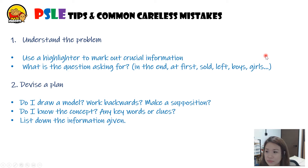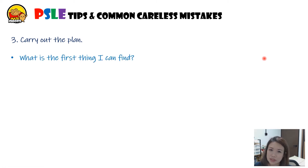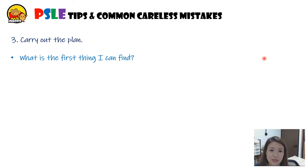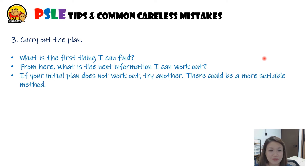Number three: carry out the plan. Ask yourself: based on the information given, what's the first thing I can find? Sometimes you have no idea how to solve, but one thing leads to another. Then from there, work out the next piece of information — step by step.